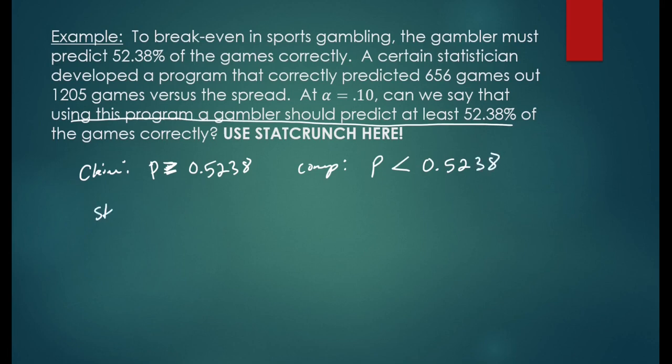In step one, we have to decide which one's the null hypothesis and which one's the alternative hypothesis. Remember the null hypothesis is the one with the equals symbol, so we're going to say the null hypothesis is p is greater than or equal to 0.5238. The alternative hypothesis is the complement, p is less than 0.5238.